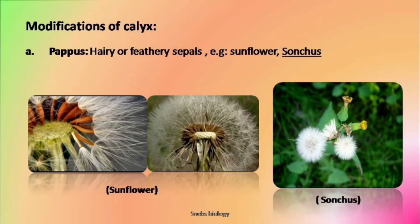For example, Sonchus, sunflower, etc. In sunflower, seed dispersal is through pappus, and this pappus is nothing but the modified calyx.